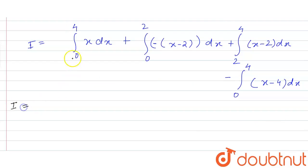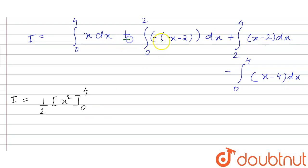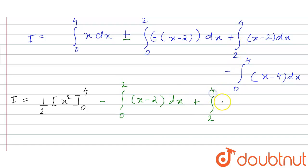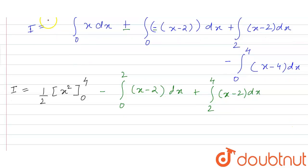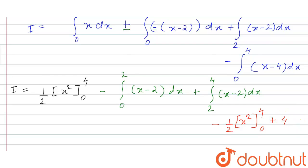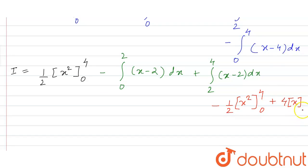On solving this, I equals: from 0 to 4, the integration of x gives x squared by 2, taking 1/2 common with limits 4 and 0. Plus, combining signs, minus of integration of x minus 2 from 0 to 2, plus integration of x minus 2 from 2 to 4, and minus of x minus 4 with limit from 0 to 4, where minus minus gives plus of 4 times x with limit from 0 to 4.